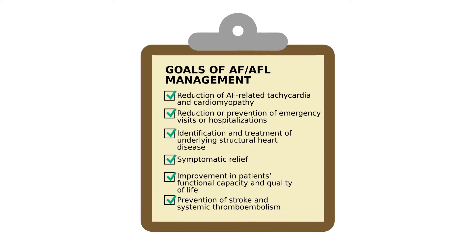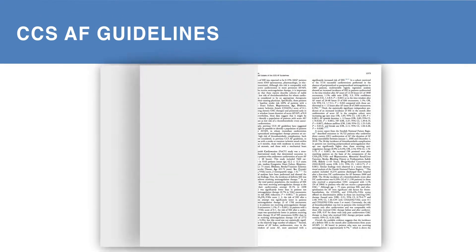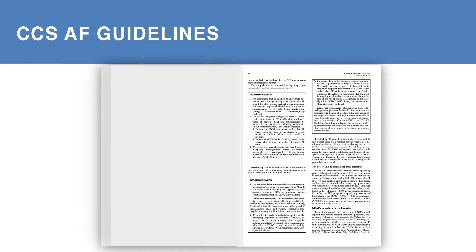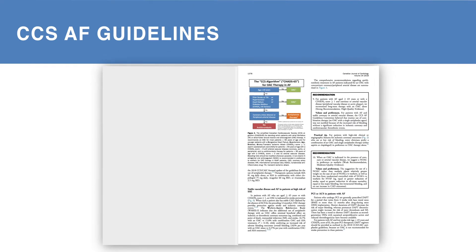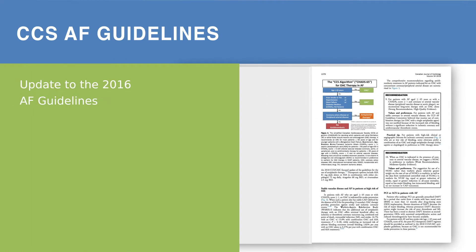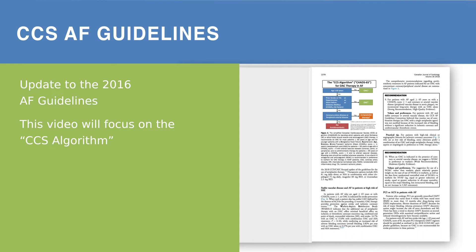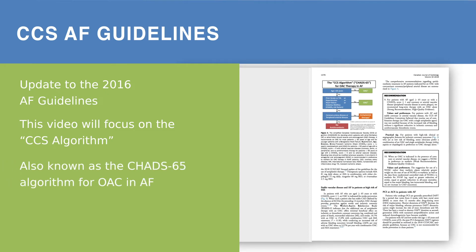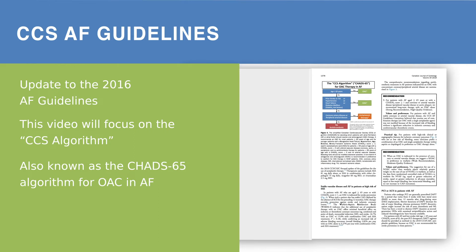We'll focus on the last goal in the remainder of this video. The 2018 Atrial Fibrillation guidelines were published in the November 2018 issue of the Canadian Journal of Cardiology and are an update to the 2016 AF guidelines. This video will focus on the CCS algorithm, otherwise known as the CHADS-65 algorithm for oral anticoagulation therapy in AF.